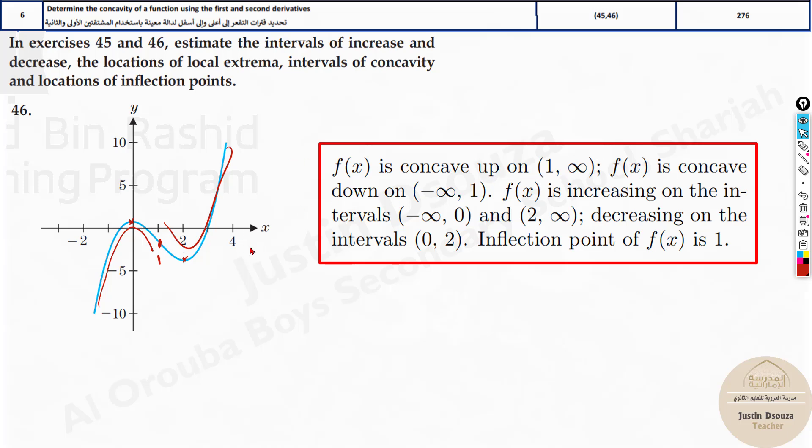It is concaving from 1 to positive infinity whereas down from minus infinity to positive 1. Now what would be the increasing limits? From negative infinity until 0 it is increasing, and then again from 2 until infinity. You can see increasing is over here. Decreasing is just from 0 to 2. An inflection point from this graph we can infer to be 1.